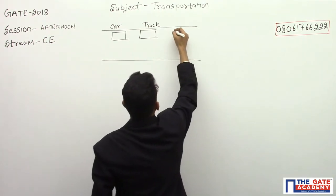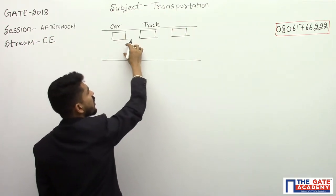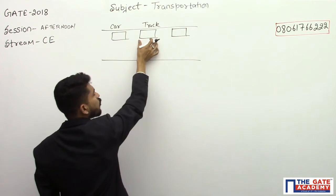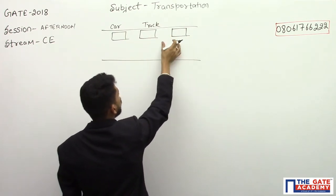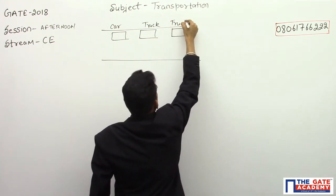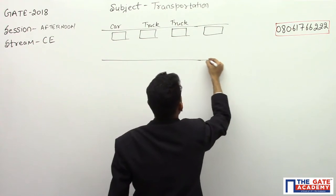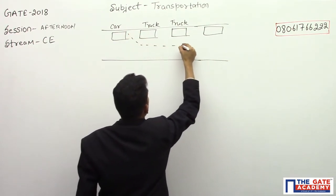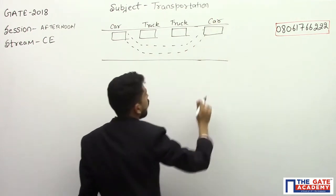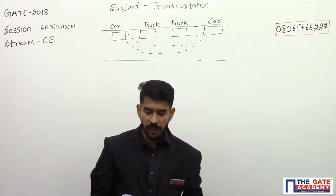What is happening is there is an overtaking maneuver taking place. During overtaking, this car will change its lane and overtake the truck. During the overtaking operation, the truck is also moving and will cover some distance — suppose the truck moves from this position to this position. The car has come over here after the overtaking operation, traveling like this.